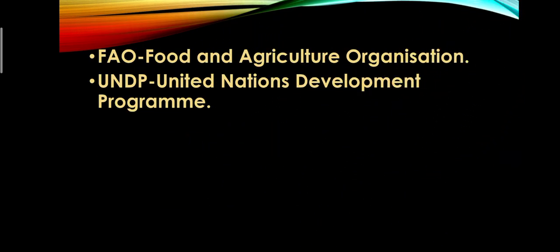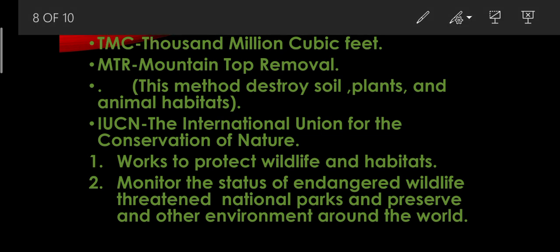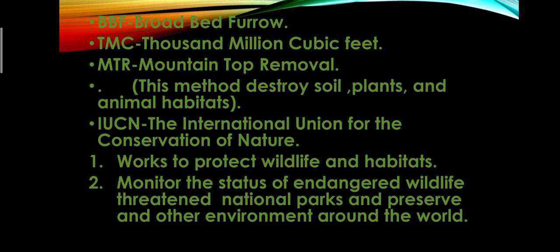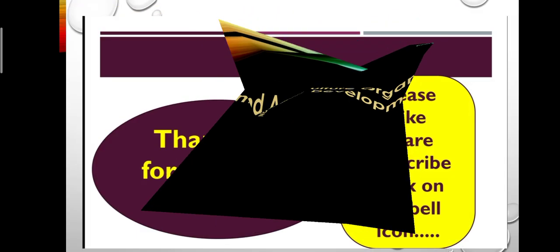Next, FAO — Food and Agriculture Organization. UNDP stands for United Nations Development Programme. BBF — broad bed furrow. Before sowing seeds, farmers plow the field creating furrows. The furrows should be broadened, meaning made wider. Whenever the furrows are wider, more water penetrates and the land retains more water.